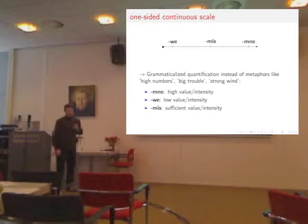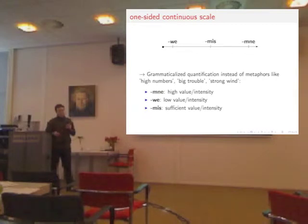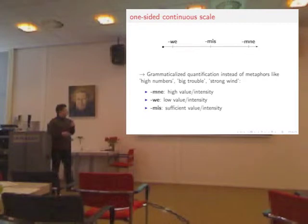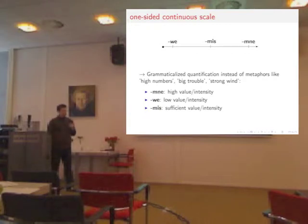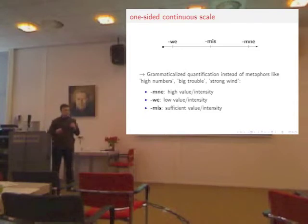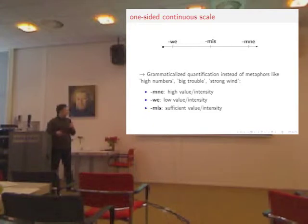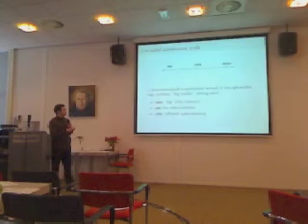Let's start with the one-sided scale. Most languages — actually all languages I know — might have a grammaticalized plural like English, but to quantify abstract ideas they use some kind of metaphor: a size metaphor like 'big trouble,' or a strength metaphor like 'strongly.' But I don't think it has to be like that. In Talmud there is the suffix 'ned,' which denotes that something is intense, the suffix 'be,' which denotes something is weak, and finally the suffix 'miss,' which denotes something is sufficient — sufficient intensity. We can arrange these suffixes on a scale.